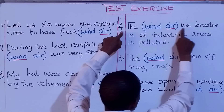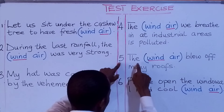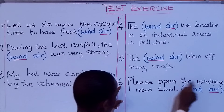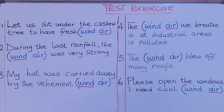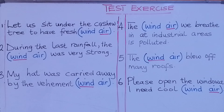Number one: Let us sit under the cashew tree to have fresh air. Number two: During the last rainfall, the wind was very strong. Number three: My car was carried away by the vehement wind. Number four: The air we breathe in at industrial areas is polluted. Number five: The wind blew off many roofs. Number six: Please open the windows. I need cool air.